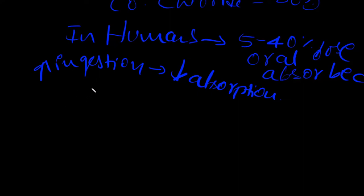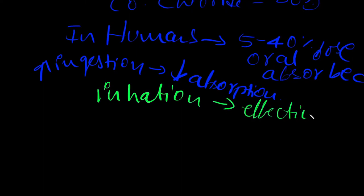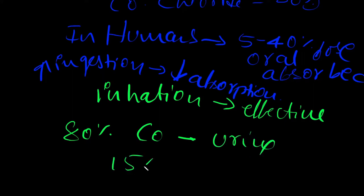However, compared to oral route, inhalation absorption of cobalt is found to be more effective in terms of absorption. 80 percent of absorbed cobalt is excreted via urine, whereas 15 percent is via feces.